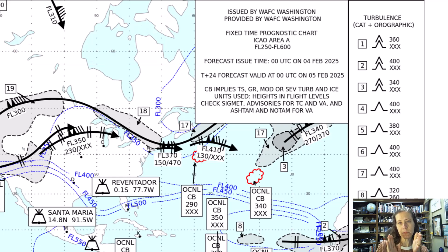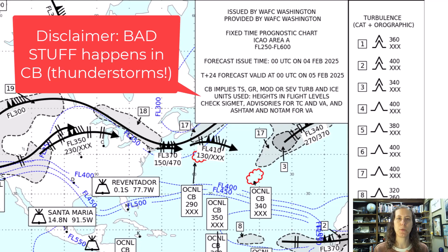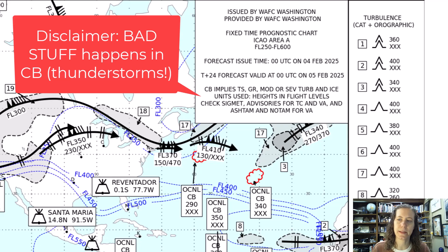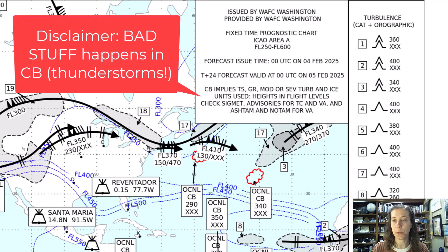There is also a disclaimer on the chart: cumulonimbus activity implies thunderstorms, hail, and moderate to severe turbulence and ice. You should also check SIGMETs and other products if you want to look up volcanic activity information.